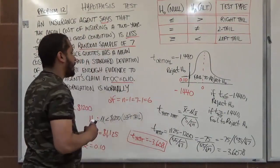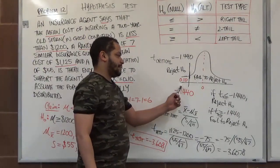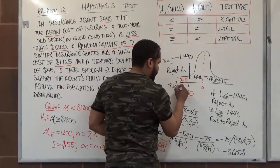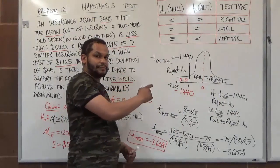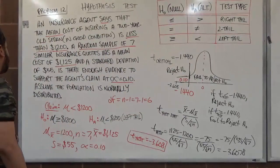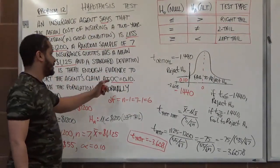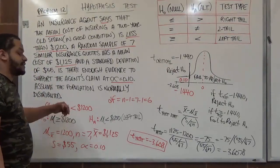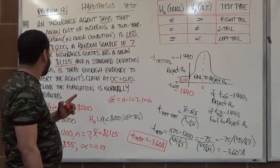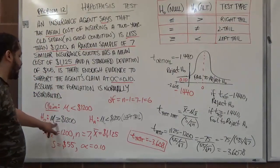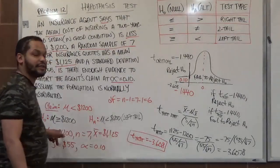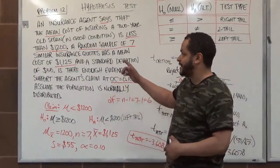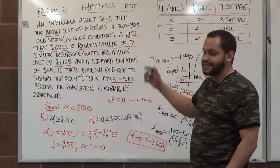Our test statistic t = −3.608 falls well below the critical value of −1.440, so we reject the null hypothesis. Since the alternative hypothesis is our claim, rejecting the null means we support the claim. Therefore, there is sufficient evidence to support the agent's claim that the mean cost of insuring a two-year-old sedan is less than $1,200.